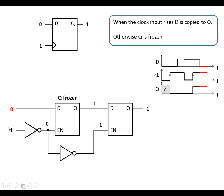So whenever the clock input is low, the first latch copies the input into the middle of the flip-flop. And when the clock goes high, the first latch is frozen and the second latch copies whatever is in the middle of the flip-flop to the output.